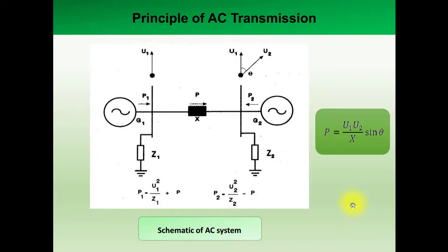Hey guys, welcome. Now we will start our new topic and the name of the topic is Principle of AC Transmission. This diagram you can see the AC transmission systems. In this one we have two sources, number one is G1 and number two source is G2, and both are supplying power through transmission line to load Z1 and Z2.